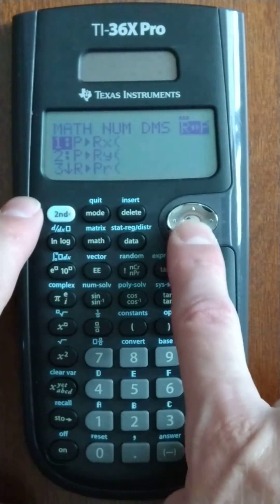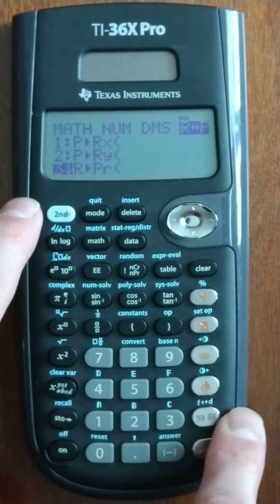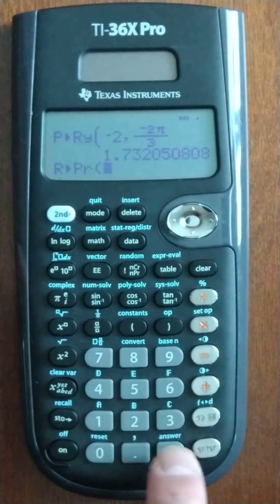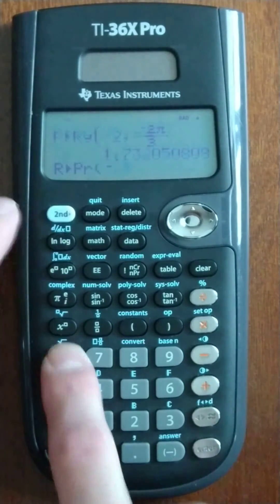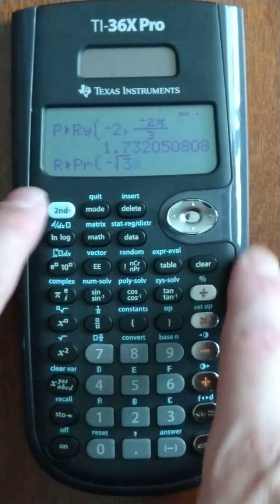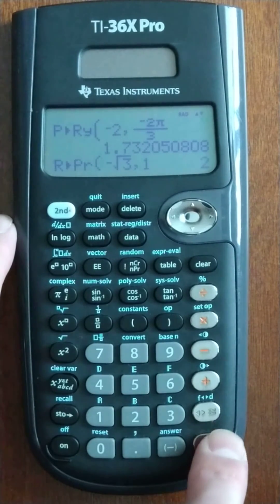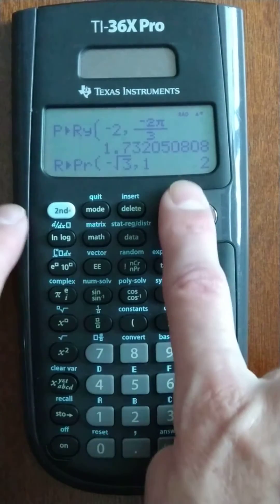So, this time we're going to do polar. We want the, we're going rectangular to polar. And we want the R value. And I'm doing negative square root of 3, comma, 1. That's our 2.